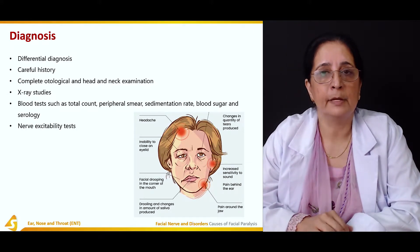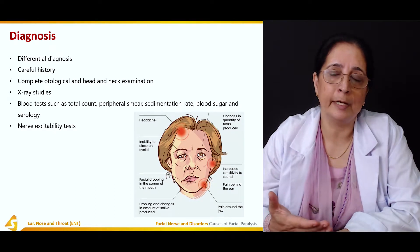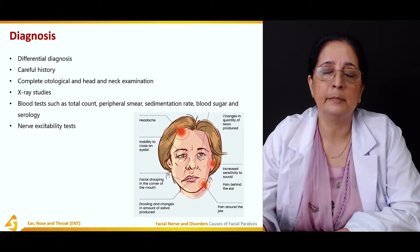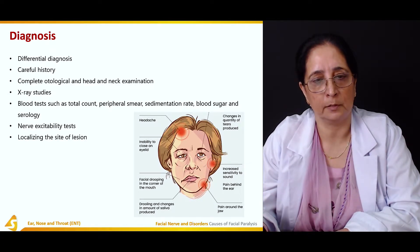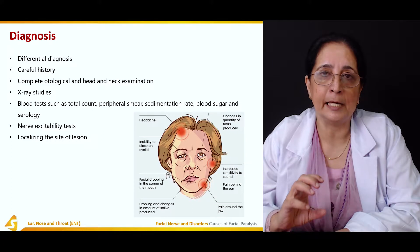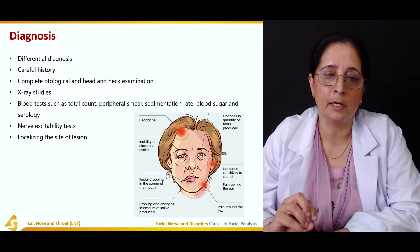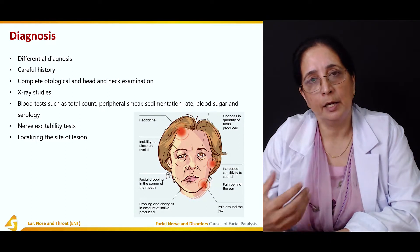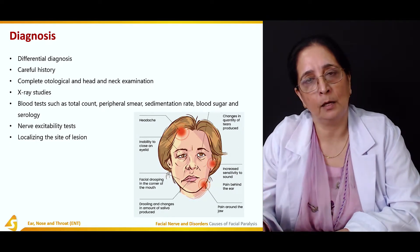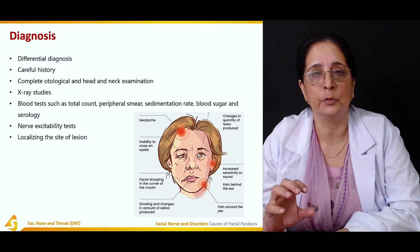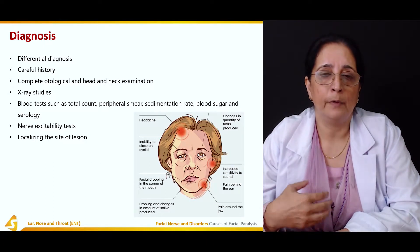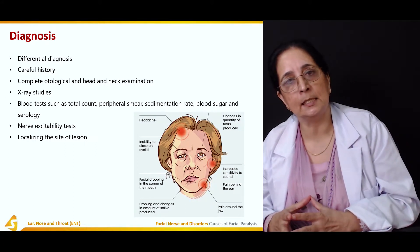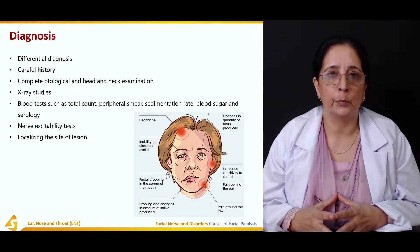Nerve excitability tests can be performed, including minimal nerve excitation and maximum nerve stimulation. Localizing the site of the lesion is important — whether it is central, intracranial, outside the cranium, from a systemic disease, or idiopathic.